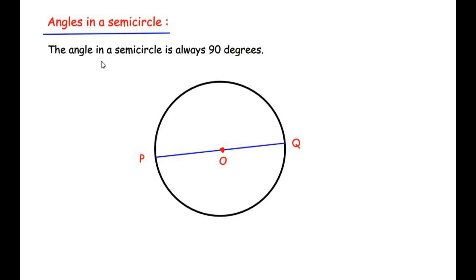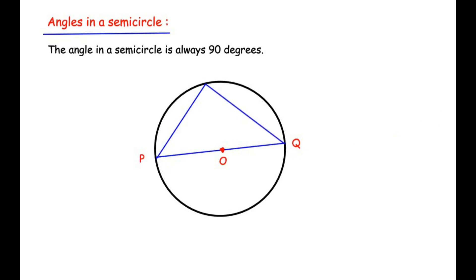The theorem states that the angle in a semicircle is always 90 degrees. As you can see, I have drawn a circle where PQ is a diameter because it passes through the center of the circle. If you draw an angle using the points of the diameter anywhere in the semicircle, it is always going to be 90 degrees. You can draw any number of angles in the semicircle and they will all be 90 degrees.